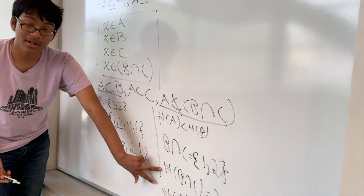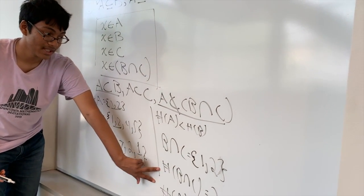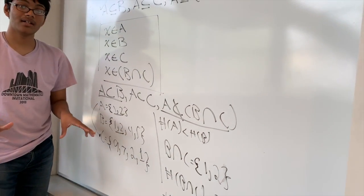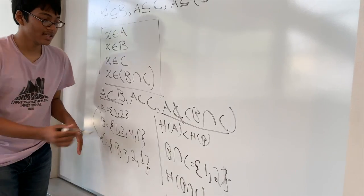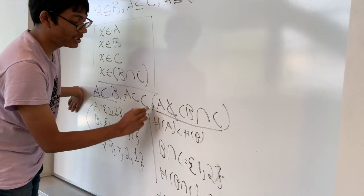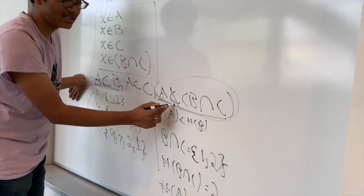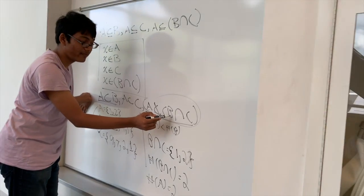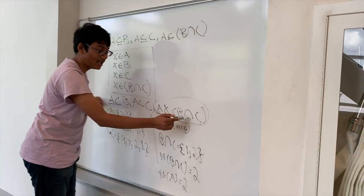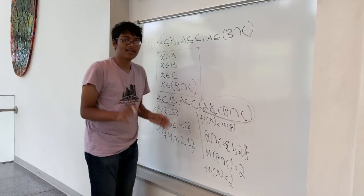That means because the cardinalities are equal, they are not proper subsets of each other. Thus, we have proved the last statement, that A is not necessarily a proper subset of the intersection of B and C.